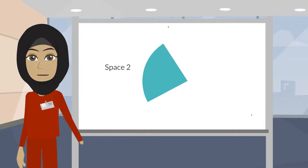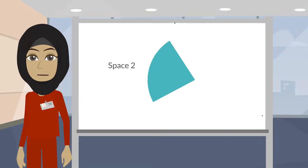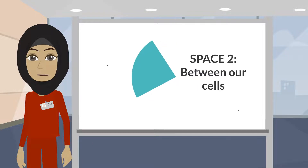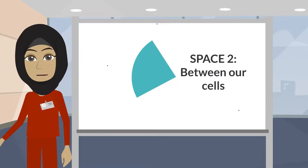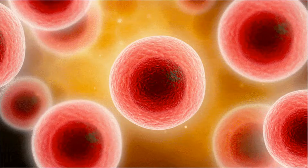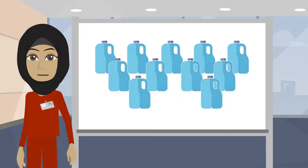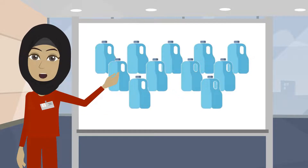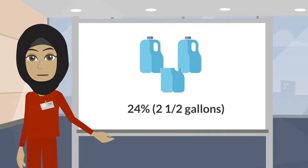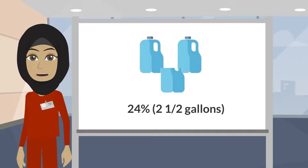Space 2 is the space in between our cells — it is the fluid our cells float in. Of the total water, or 11 gallons, this space holds about 24%, or 2.5 gallons, of our body water.